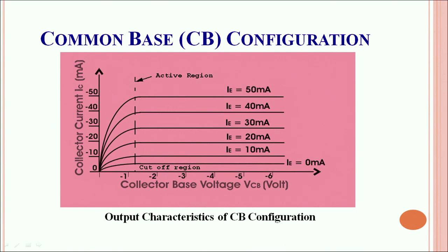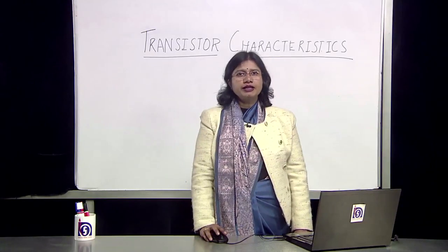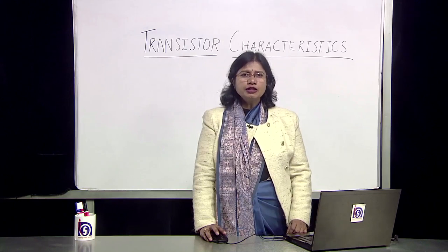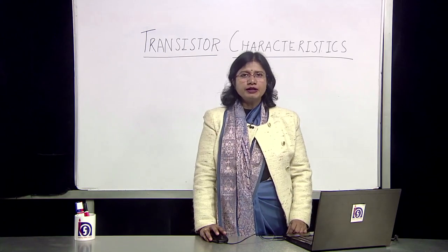The common base configuration is commonly used for voltage regulators, unlike the common emitter configuration which finds its application in current gain, voltage gain, and power gain devices. Another configuration we will consider is the common collector configuration, which is not used very often.